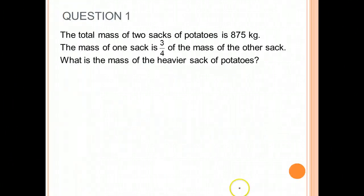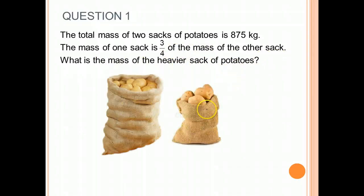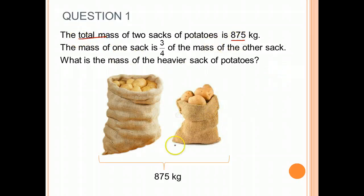Question 1. The total mass of 2 sacks of potatoes is 875 kg. The mass of 1 sack is 3 quarters of the mass of the other sack. What is the mass of the heavier sack of potatoes? We know that there are 2 sacks of potatoes and the total mass is 875 kg.